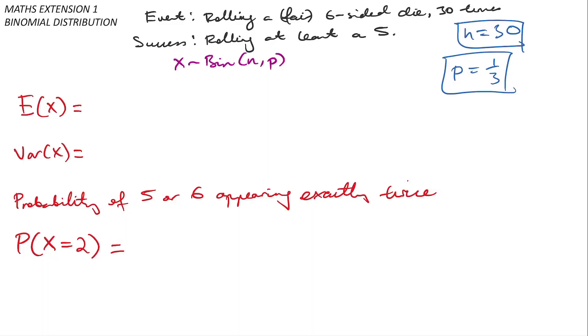For the expected value, on average I will get n times p successes, which is 30 times 1/3, which equals 10.